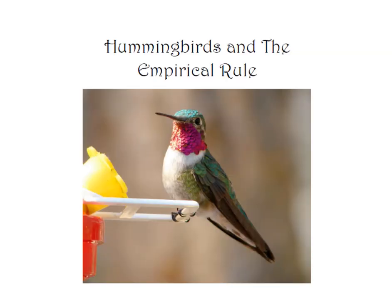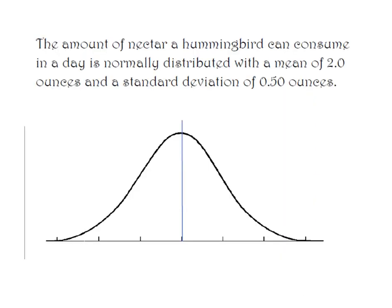Greetings ladies and gentlemen, it's Professor Williams and today I'm bringing you hummingbirds, normal distribution, and the empirical rule. We're given that the amount of nectar a hummingbird can consume in a day is normally distributed with a mean of 2.0 ounces and a standard deviation of 0.5 ounces.